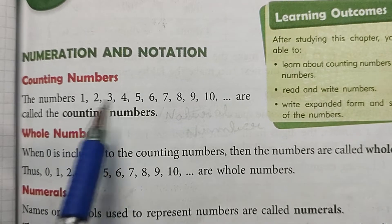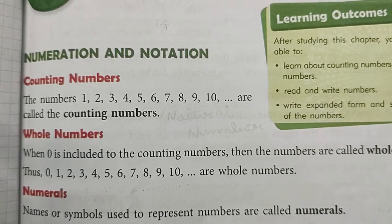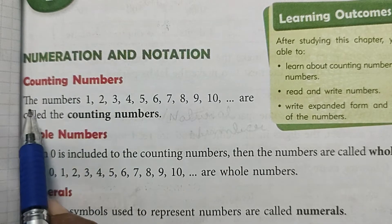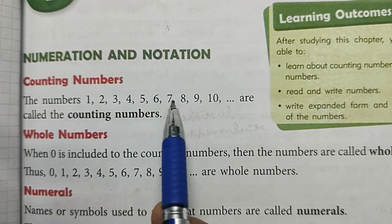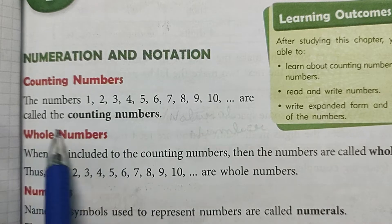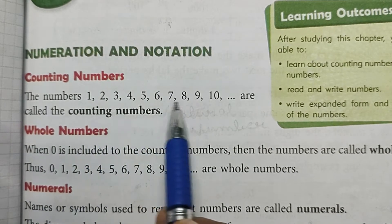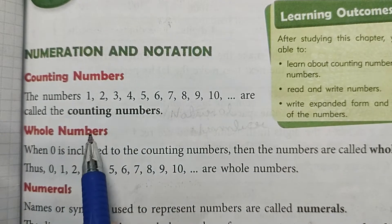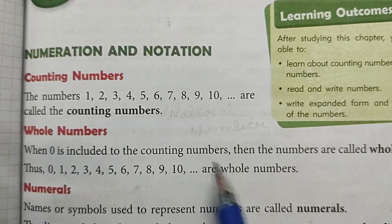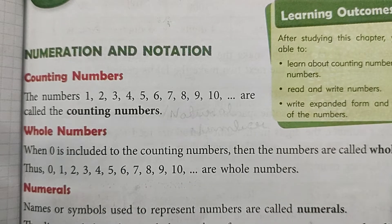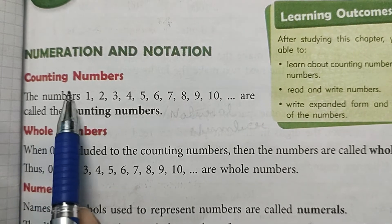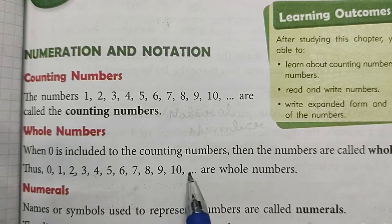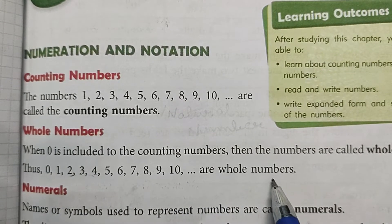Our first topic is numeration and notation. The heading is 'Counting Numbers.' The numbers 1, 2, 3, 4, 5, 6, 7, 8, 9, 10 and so on are called the counting numbers — 1 سے لے کے جتنے بھی آگے تک number ہیں انہیں counting numbers کہا جاتا ہے. And whole numbers: when 0 is included in the counting numbers, then they are called whole numbers — 0 سے لے کے آگے تک جتنے بھی numbers ہیں وہ سب whole numbers کہے جاتے ہیں۔